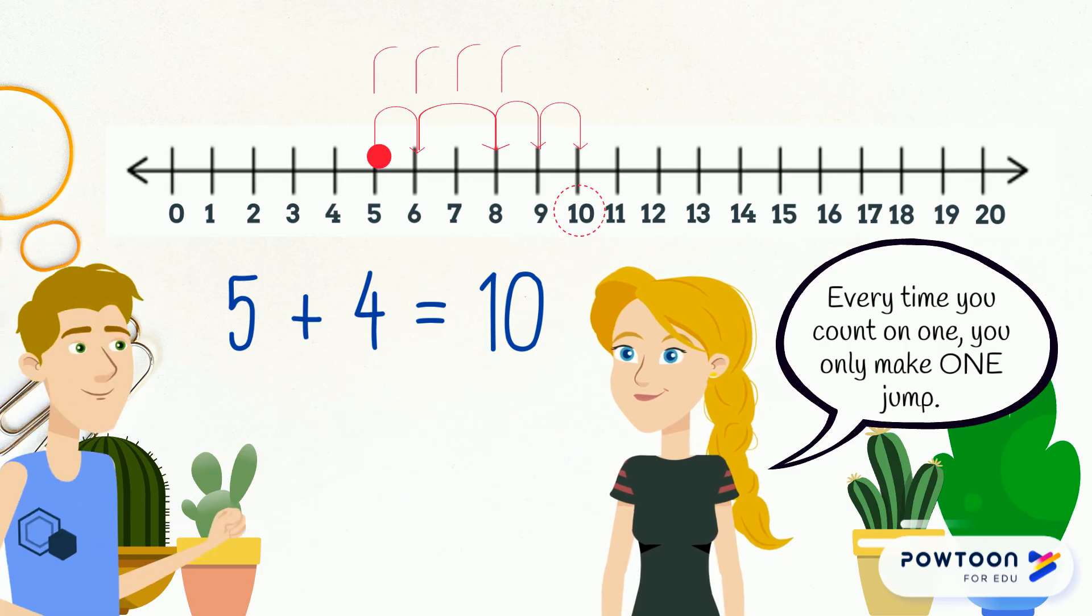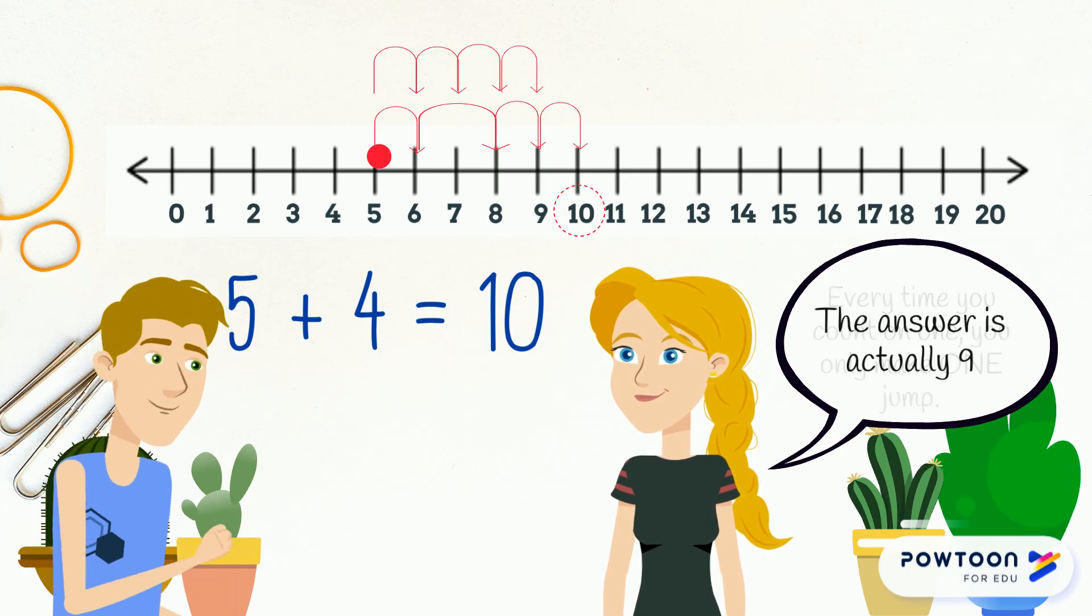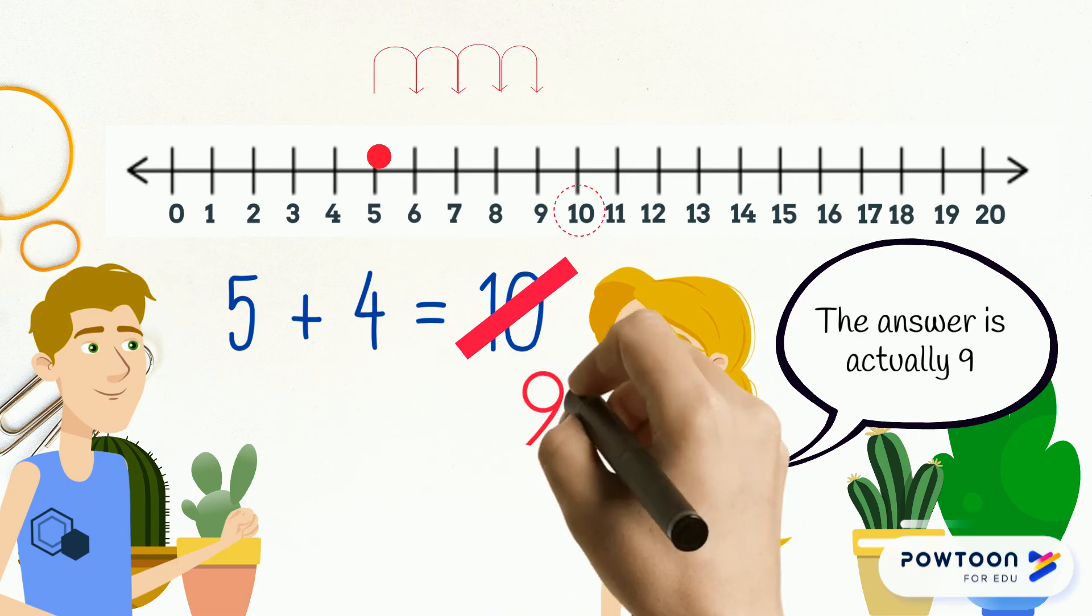Every time you count 1, you only make 1 jump. The answer is actually 9.